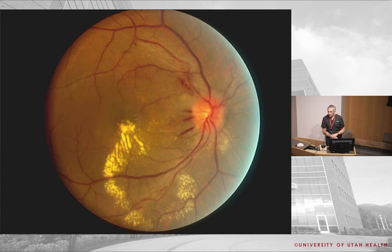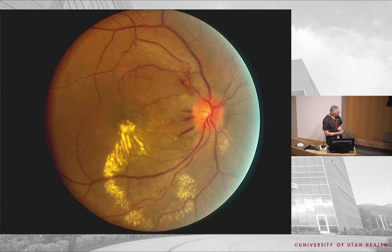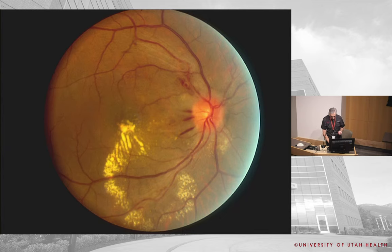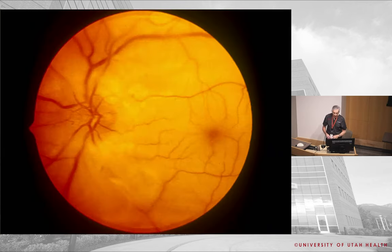Sometimes hypertensive retinopathy will look like a star or starfish shape — that tracks along Henle's layer. This is again severe hypertensive retinopathy. If you look carefully, the disc looks more red than the usual yellowish-pink, indicating dilated vessels. In severe hypertensive retinopathy you can even get papilledema and disc changes. Here you see hemorrhage, exudates, and edema of the optic nerve — all features of severe hypertensive retinopathy.